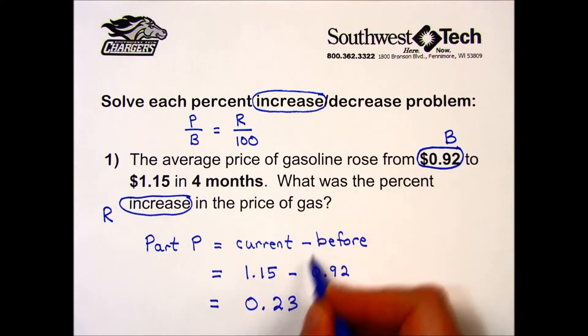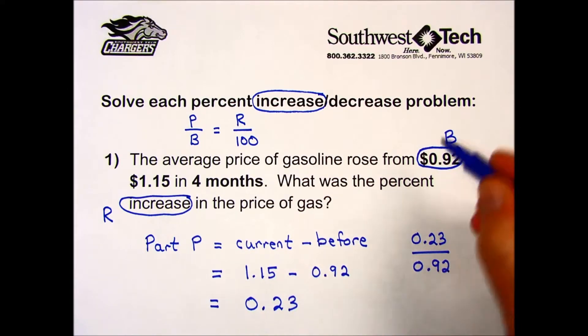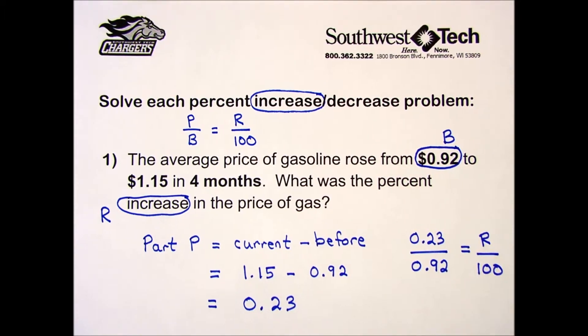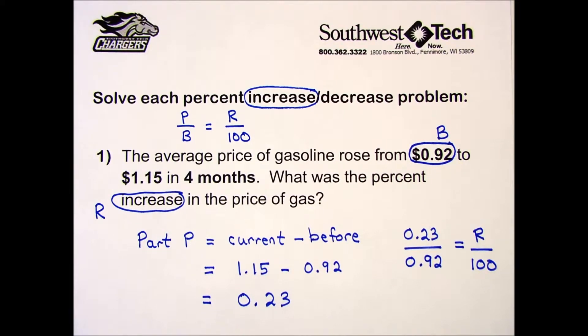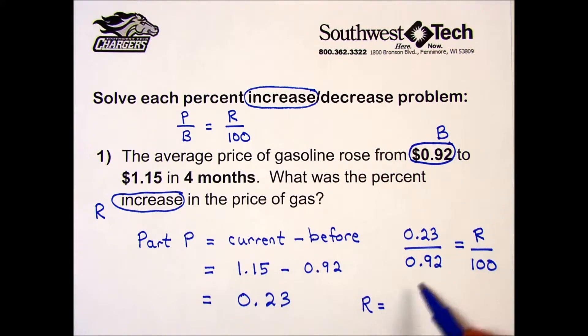Now I place these numbers into my formula. I have part over base—base is always the number that came before the change—equals rate over 100. Cross multiplying, I multiply the two numbers on the diagonal: 0.23 times 100 and divide by the number on the diagonal with my unknown, 0.92.